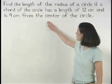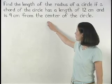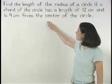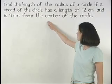Find the length of the radius of a circle if a chord of the circle has a length of 12 centimeters and is 4 centimeters from the center of the circle.